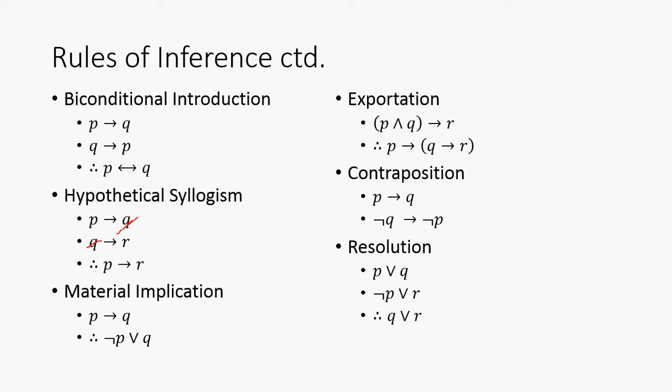There's also the material implication. P implies Q is logically equivalent to not P or Q, and I discussed that earlier. We have exportation, which is P and Q implies R. This is equivalent to P implies Q implies R.